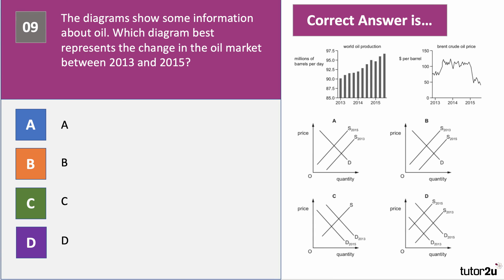Two more questions to go. Question nine: the diagrams show some information about oil. Which diagram — A, B, C or D — best represents the change in the oil market between 2013 and 2015? Take a moment to look at the data, press the pause button, have a go at the question.